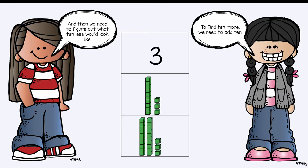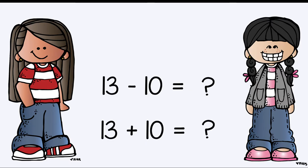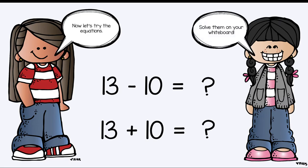3, 13, and what's that bottom number, scholars? 23. Great job, Joanna. So now let's try the equations. 13 minus 10 is equal to what? Solve them on your whiteboard. 13 minus 10 is equal to 3. 13 plus 10 is equal to 23. How did you do?